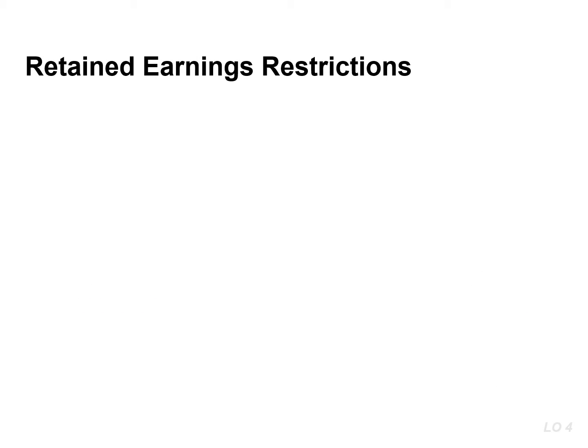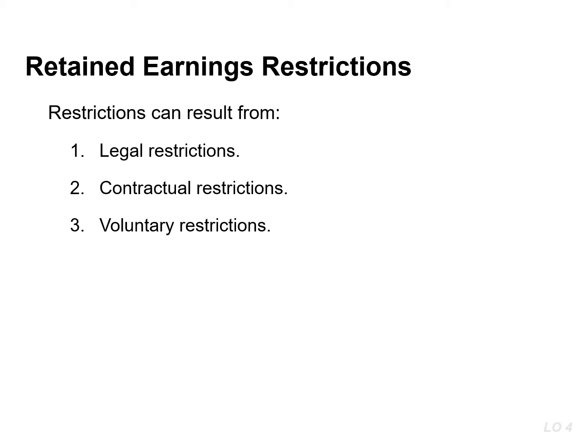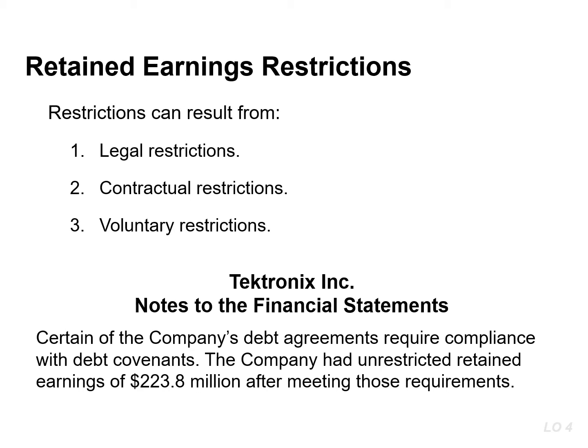The balance in retained earnings is generally available for dividend declarations. In some circumstances, there may be a restriction that makes a portion of the balance unavailable for dividends. Restrictions result from one or more of the following causes: legal, contractual, or voluntary restrictions. Companies generally disclose retained earnings restrictions in the notes to the financial statements, like the example you see here.